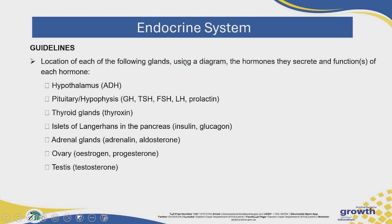Once you know the definition of an endocrine gland, you need to learn the location of the following glands using a diagram, the hormones they secrete, and the functions of each hormone. Get yourself a table and make sure you know for each gland where it is found, that you can identify it using a diagram, which hormones they secrete, and the functions of those hormones. The glands you need to learn include the hypothalamus which secretes ADH, and the pituitary gland that secretes GH, TSH, FSH, LH, and prolactin.